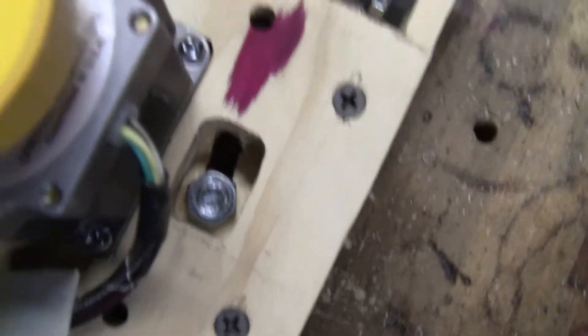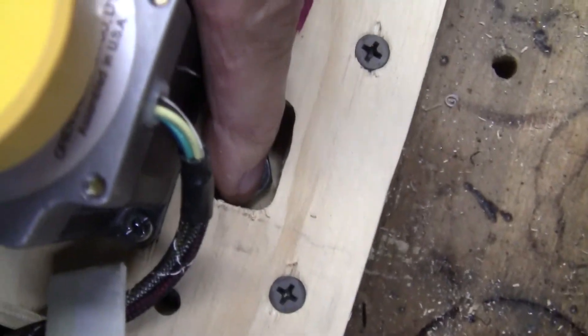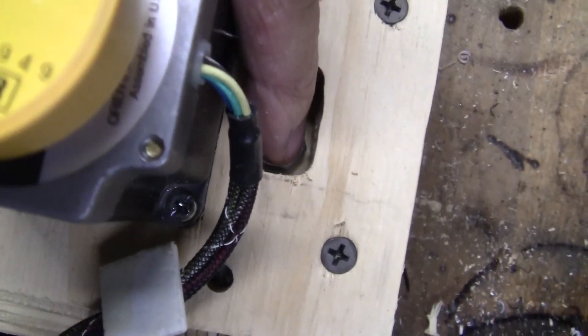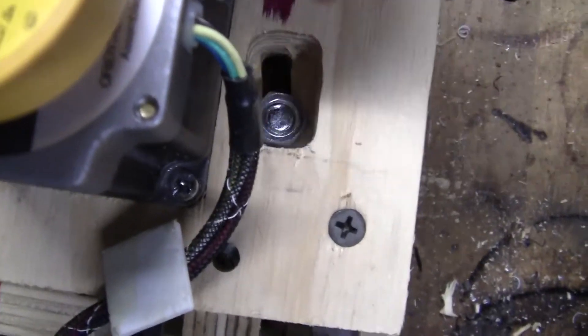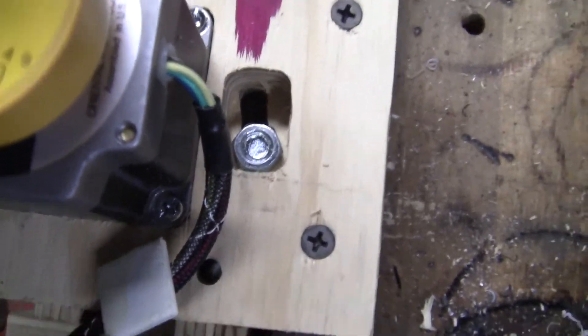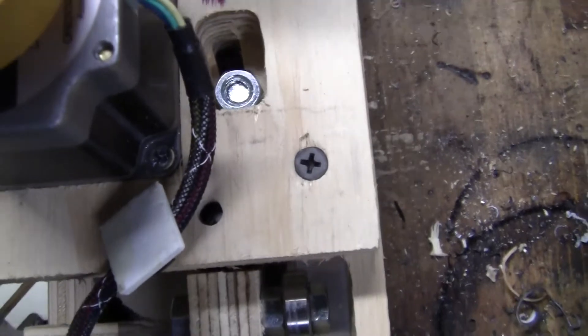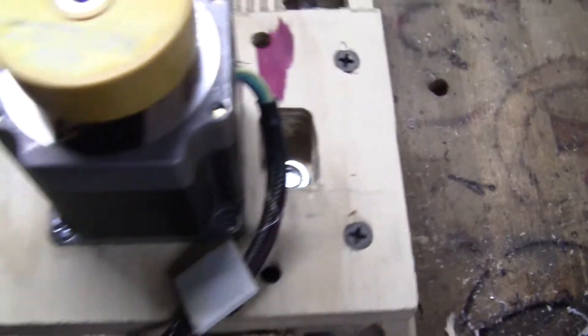Inside here, notice that this bolt, which holds one of the side-to-side rails, is at an angle. I can use that to adjust the tension against the rail.